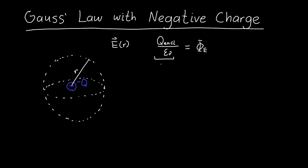Let's start with the enclosed charge. Because this is a point charge, no matter how big I make my sphere around the charge it's going to have the same enclosed charge. So in this case my enclosed charge is just equal to the point charge, which I've said is minus Q. So that was pretty straightforward.